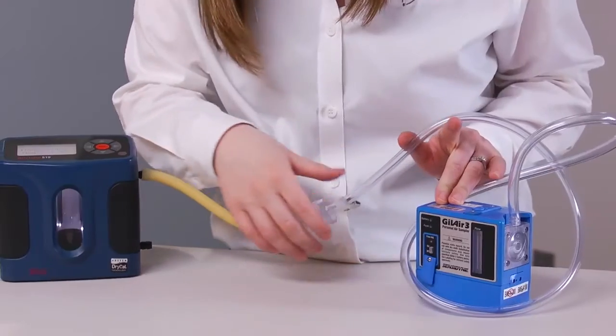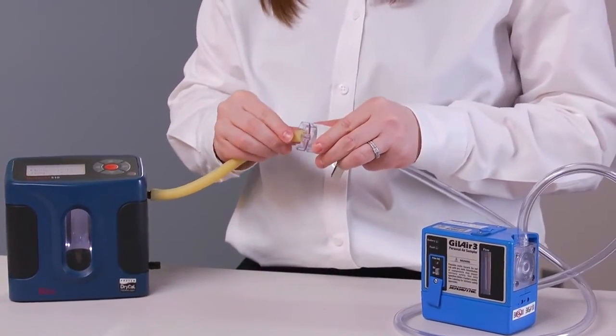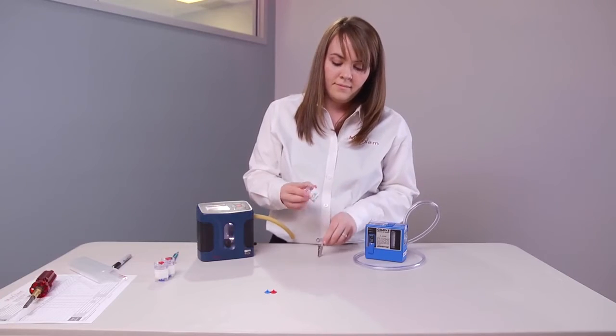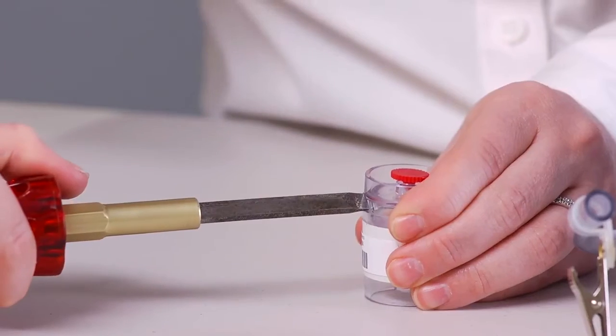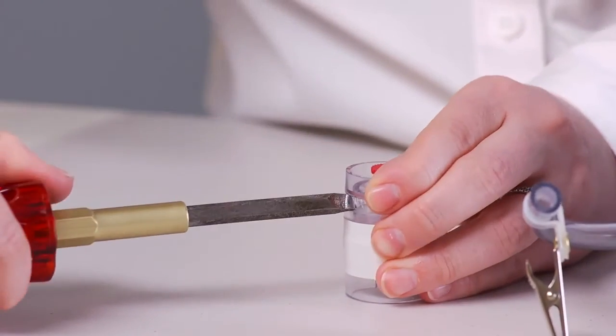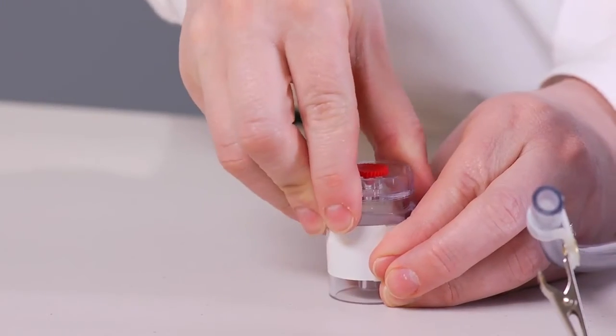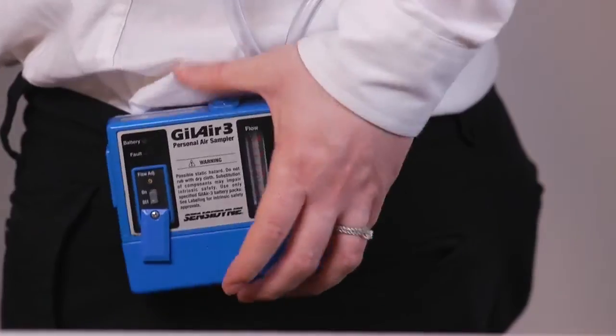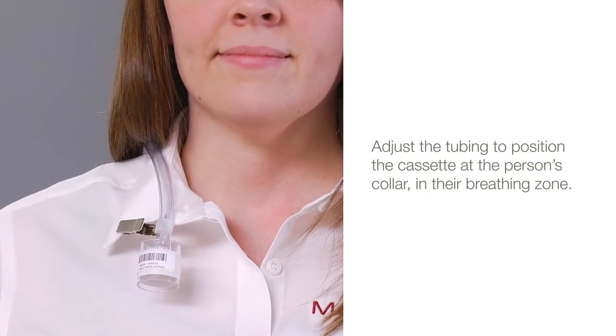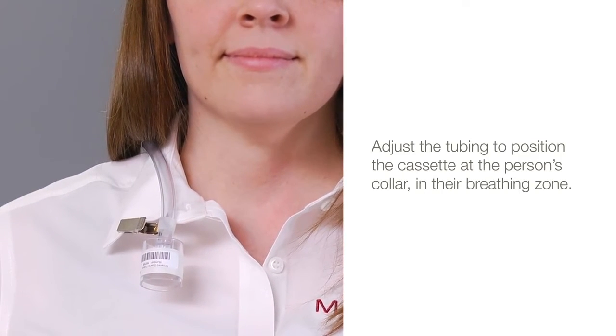After calibrating, turn off the pump, remove the calibration filter, and set it aside. Take a new cassette and remove the top by prying off the top inlet third of the cassette so that you can collect the sample open-faced. Adjust the tubing to position the cassette at the person's collar near their breathing zone.